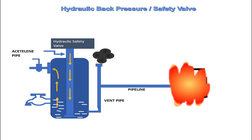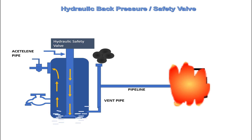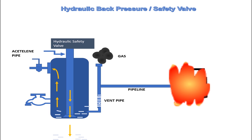The cylindrical device is filled with water. In the event of backfire, the water level is pushed down and water is forced up into the vent pipe until the hole is exposed. The burnt gases in case of a backfire pass up the vent pipe into the atmosphere.